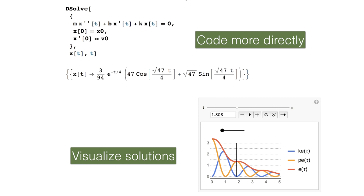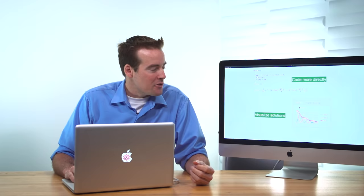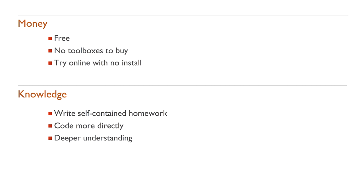So in conclusion, you can code more directly. You don't have to do this rigmarole where you translate your problem into a specific format that the tool needs in order to solve the problem. In Mathematica, it was designed to solve these kinds of problems, and so you can just de-solve it directly. You can visualize the solutions of your problem in ways that you couldn't do in other programming languages, so that you can get a lot of physical insight. So that's the end of the knowledge section. You can write self-contained homeworks that you can look back on years later. You can code more directly and get a deeper understanding into the problem.